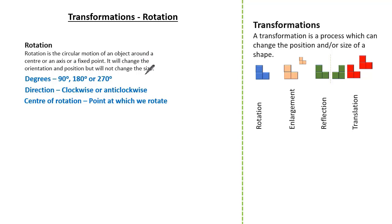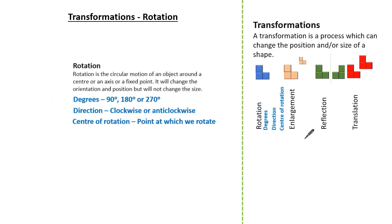When we rotate we need three pieces of information. We need the degrees: 90, 180 or 270. We need the direction: clockwise or anticlockwise. And we need the centre of rotation. This is the point at which we rotate. So now we know the basics of rotation and we know the three key elements associated with rotation.